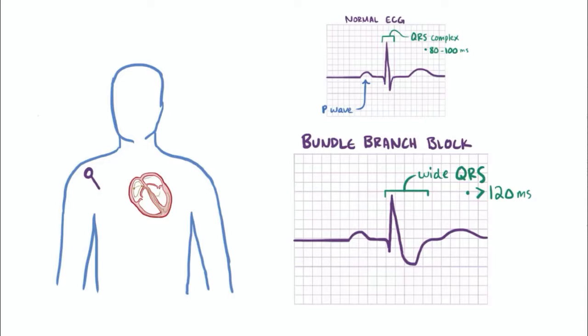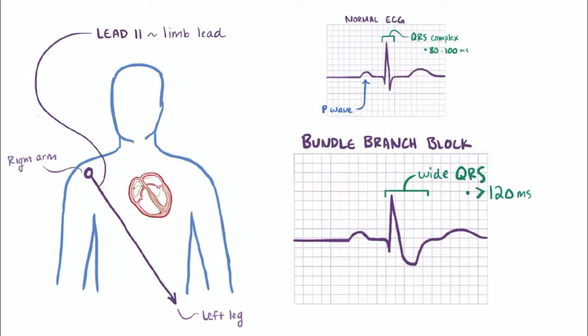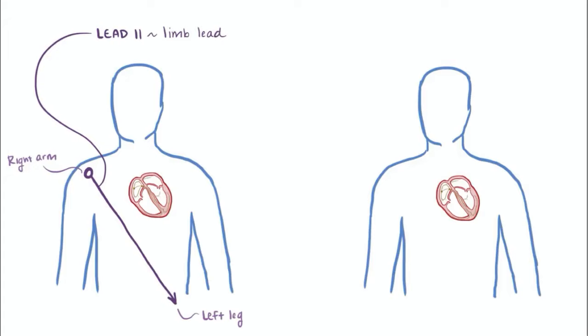So far we've been looking at a relatively common view of the heart called lead 2, which is a type of limb lead since we get it by attaching leads to the right arm and left leg, both of which are our limbs. Even though this lead can give us some solid information, it's often helpful to use other leads as well, especially when differentiating between left and right bundle branch block.